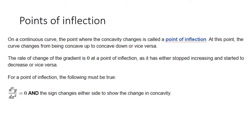Let's look at another important concept: the point of inflection. When we have a continuous curve, the point where the concavity changes is called a point of inflection. At the point of inflection, the curve changes from concaving up to concaving down, or vice versa. The rate of change of the gradient is zero at a point of inflection — this is talking about the second derivative function, not the first derivative.